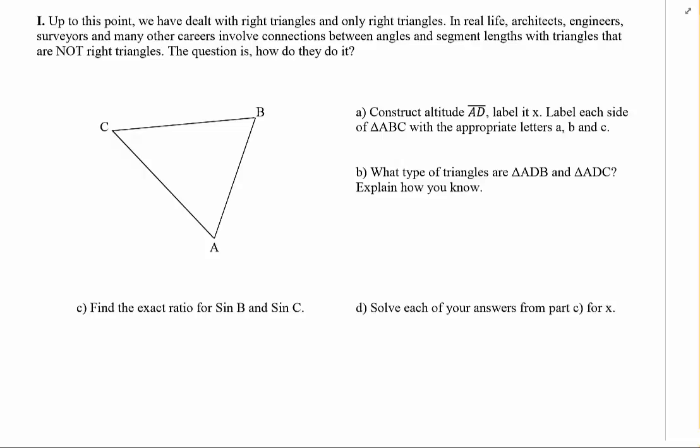So the first part says construct altitude AD and label it X. So instead of constructing it, I'm just going to draw it. So here's AD, and they want me to label that X. It says label each side with the appropriate letters A, B, and C. So A is across from side A, B is across from side B, and C is across from side C.